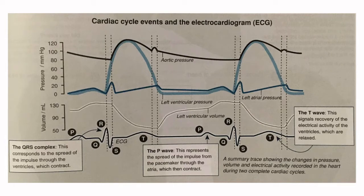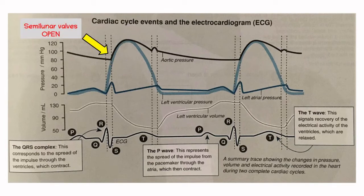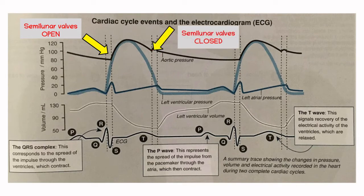Starting with the aortic pressure — the black line at the top — we can see that aortic pressure increases just after ventricular pressure has increased. This makes sense as blood from the ventricles goes into the aorta, causing this pressure increase. The aortic pressure can only increase when the semilunar valves are open — these are the valves at the opening of the aorta. Later in the graph, where the pressure dips, this is where the semilunar valves close to prevent backflow.